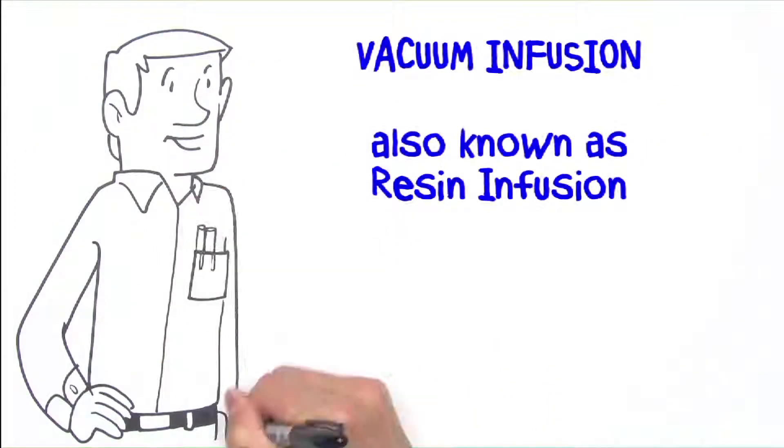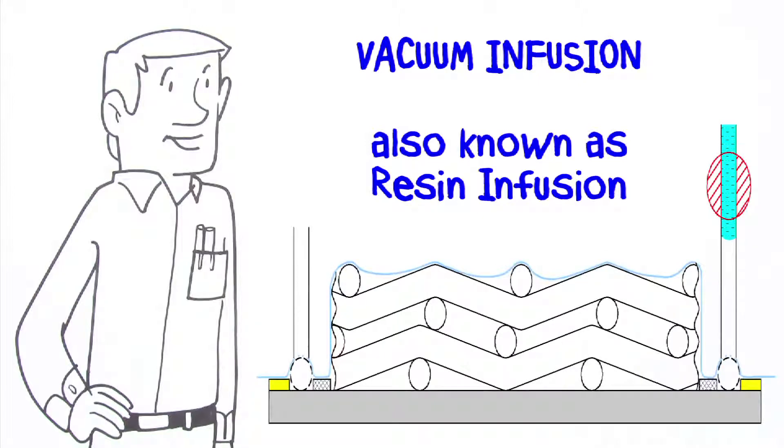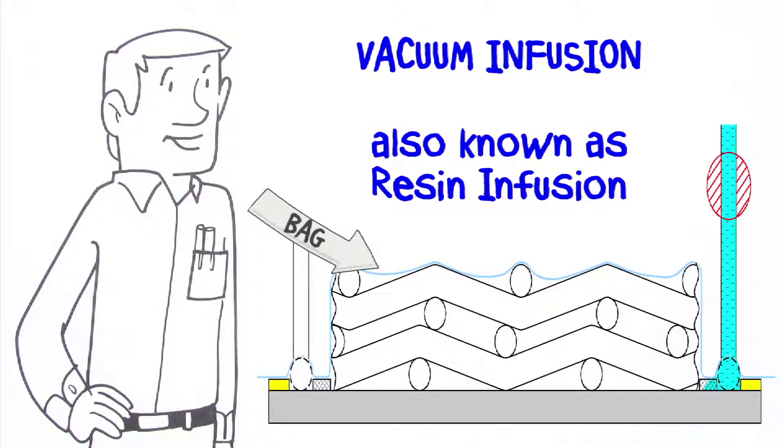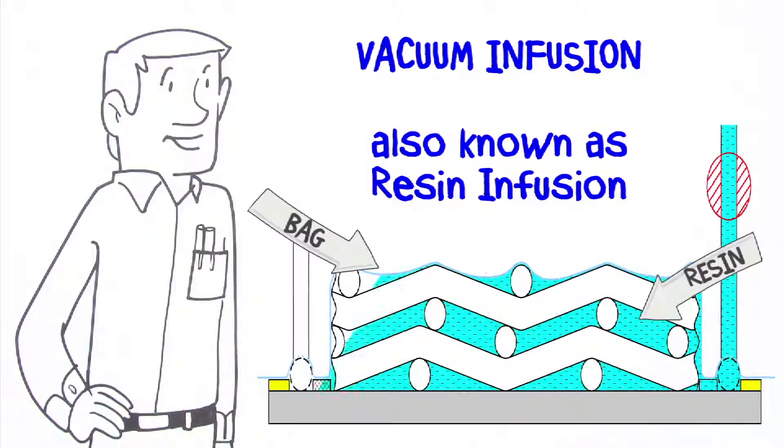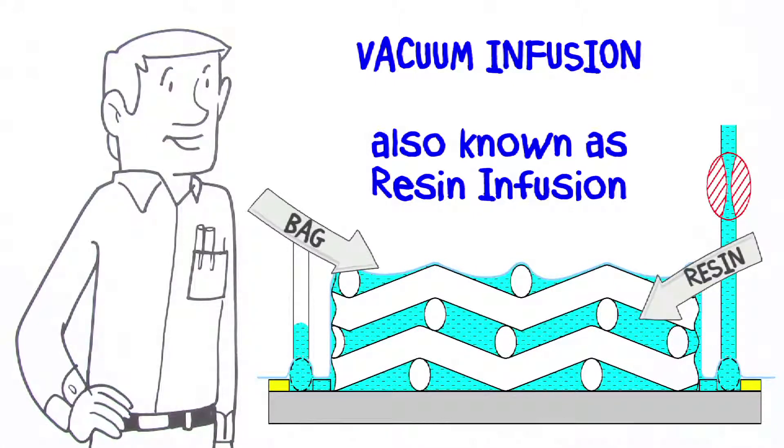Vacuum infusion, also known as resin infusion, works ingeniously by sealing a bag to the mold, then sucking out all the air while drawing in the resin, which replaces the air. In a perfect world, all of the air is replaced by resin. Nifty. Very efficient.